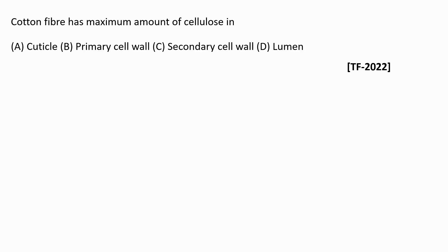Hello everyone. In this series we will be discussing GATE 2022 Textiles questions. The first question is: cotton fiber has maximum amount of cellulose in which structure? Option A: cuticle, Option B: primary cell wall, Option C: secondary cell wall, Option D: lumen.